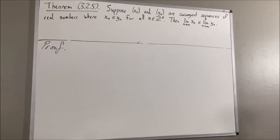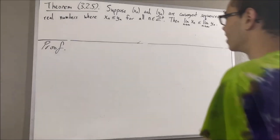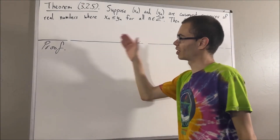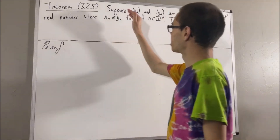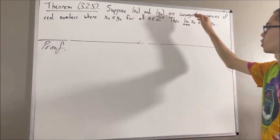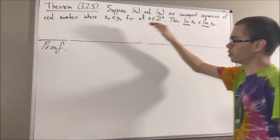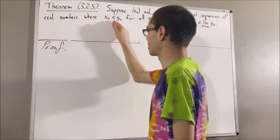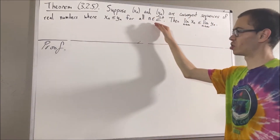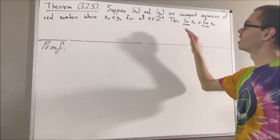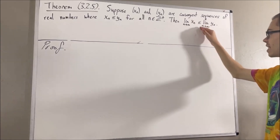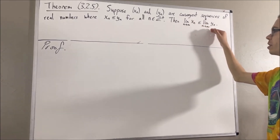Hello! In this video, we are going to prove the following theorem. Suppose xn and yn are convergent sequences of real numbers, where xn is less than or equal to yn for all positive integers n. Then, the limit of xn is less than or equal to the limit of yn.